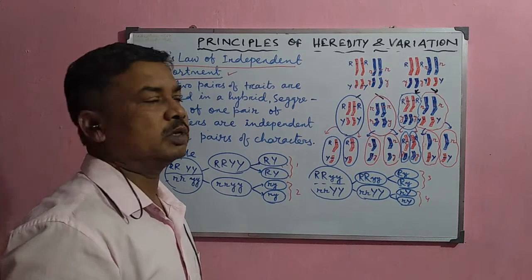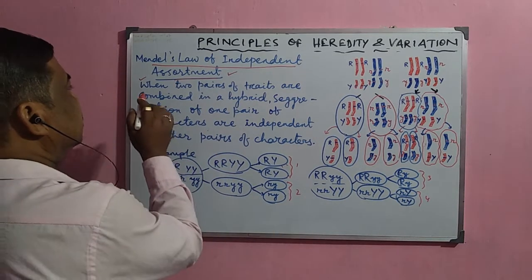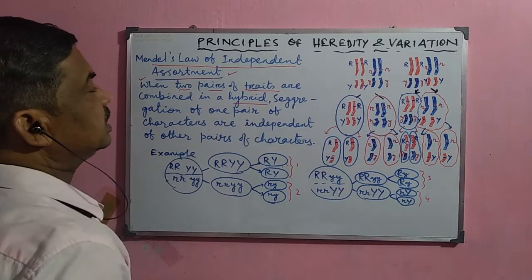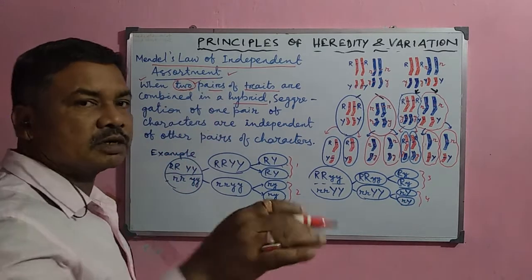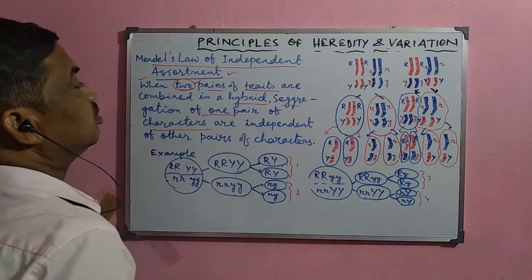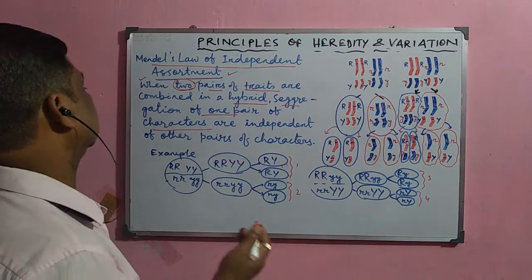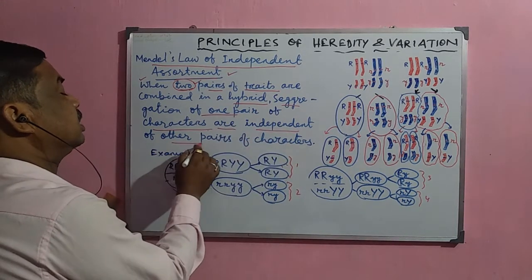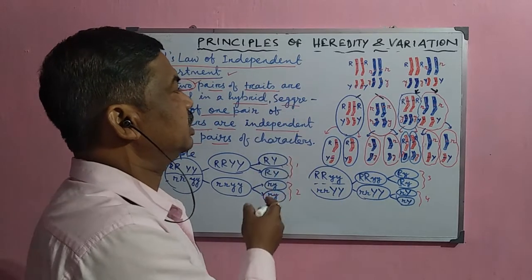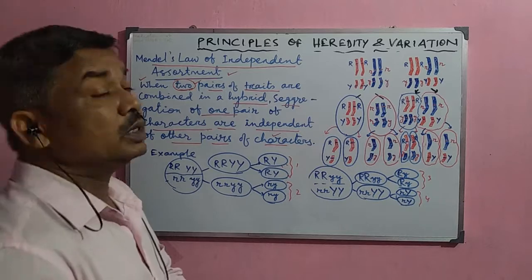What is the law of independent assortment? This law was actually derived from the di-hybrid cross experiment. According to this, when two pairs of contrasting traits are combined in the hybrid, in the di-hybrid cross experiment, two pairs of contrasting characters were transmitted. The segregation of one pair of characters — for example, the round character and yellow character are one pair, and the wrinkled character and green character are another pair — these pairs of characters are actually independent of the other pair of characters. This is called the law of independent assortment.